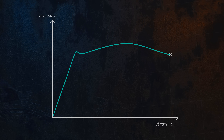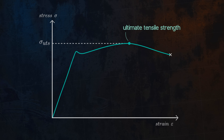The ultimate tensile strength of a material is defined as the maximum stress which is reached during the tensile test, corresponding to this point on the stress-strain curve. It is the maximum stress the material can withstand during a tensile test. The yield strength is defined as the stress at which a material begins to deform plastically.